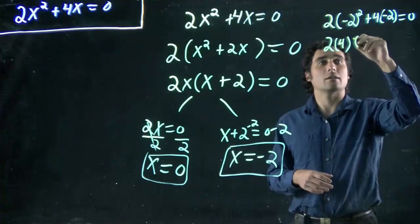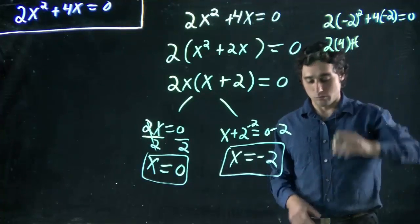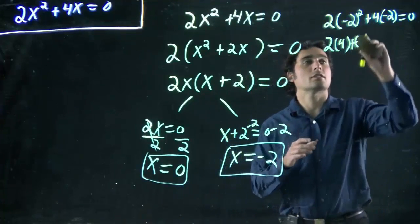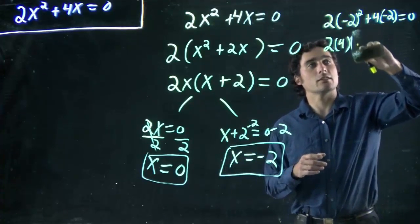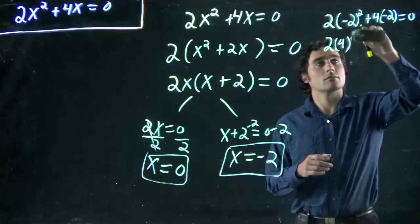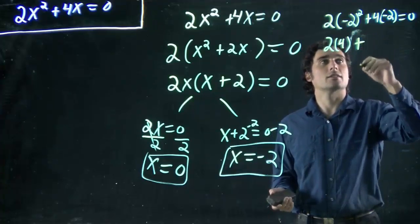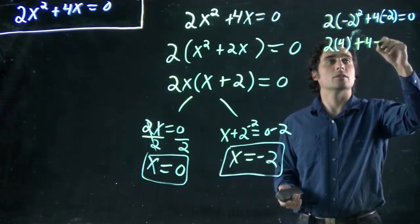Well, this is 2 times -2 squared is 4. Plus 4 times, made that a little too close. Let's do some erasing.